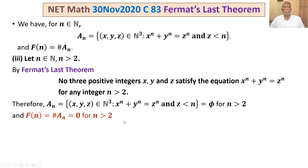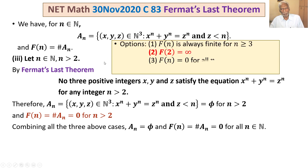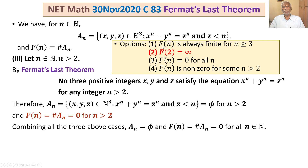Combining all three cases, A_n is empty and F(n) = 0 for all n belonging to N. Recalling the options: Option 3 says F(n) = 0 for all n, which is true. Since F(n) = 0 for all n, certainly F(n) is always finite for n greater than or equal to 3, so Option 1 is also true. Option 4 states F(n) is non-zero for some n greater than 2, which is false since F(n) = 0 for all n.